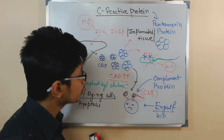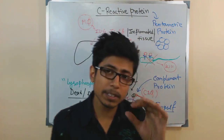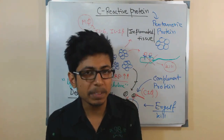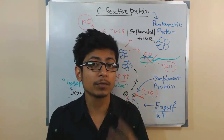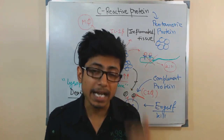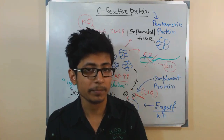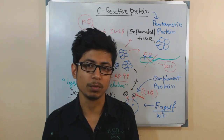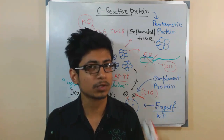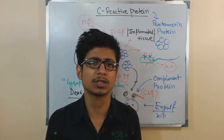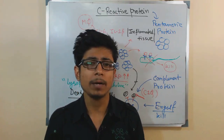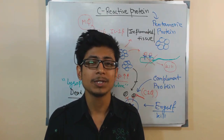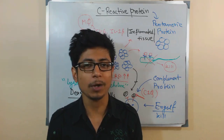So now you understand: if there is a high amount of C-Reactive Protein in your body, that means an infection is going on and your body is trying to fight against it — that's why CRP increases. This is very important to determine whether any infection is present in your body. If you liked the video, please subscribe, like, and share. Thank you and all the best for the future.